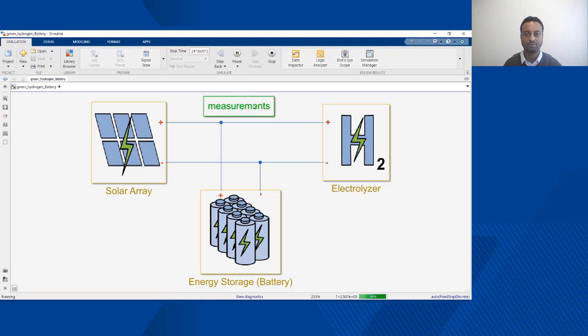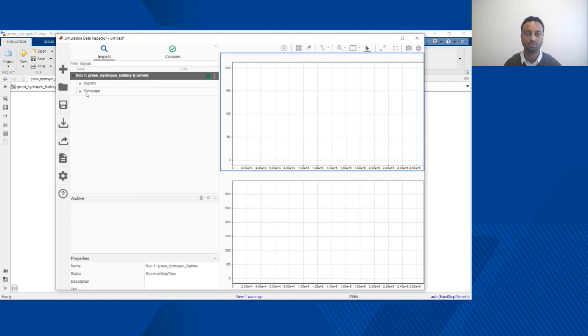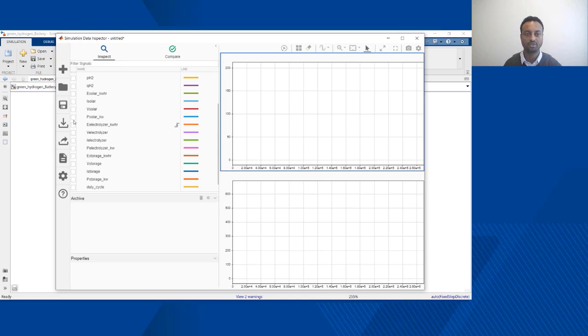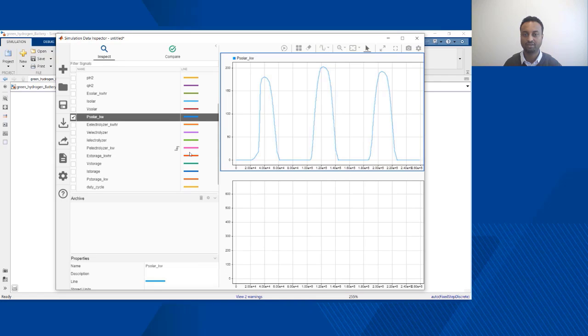I'm also able to capture some important measurements so I can inspect what happened during this three-day simulation scenario. I can use my data inspector to look at some signals, for example the power which was generated from the solar arrays. Here you can see that there were these three daily peaks, peak power during the daytime and no power generated during the night times. Let's compare that against the power which was consumed by the electrolyzer.